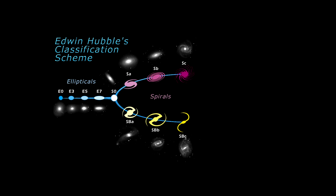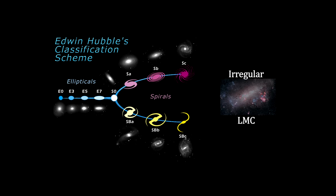These broad classes can be extended to enable finer distinctions of appearance and to encompass other types of galaxies, such as irregular galaxies, which have no obvious regular structure, either disk-like or ellipsoidal. The Large Magellanic Cloud is an example of this.